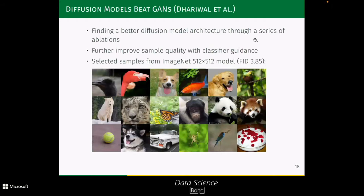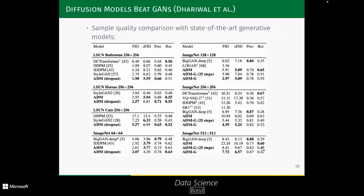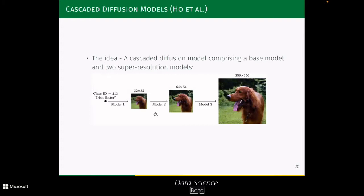Following the original DDPM, OpenAI published 'Diffusion Models Beat GANs', where they found a better diffusion model architecture with ablation studies and improved sample quality using classifier guidance. For example, on the ImageNet dataset at resolution 256, they achieve an FID score of 3.85, which was state-of-the-art. Comparing their ADM (Diffusion Beats GANs) method on the FID score chart, it achieves state-of-the-art results compared to all previous methods.